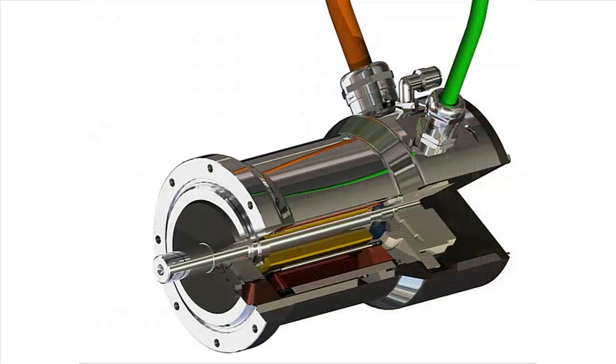The MPW is sealed for IP69K washdown environments. An IP69K antimicrobial seal with slinger action is installed on the front face of the motor. This feature repels liquid as well as preventing its ingress into the housing.